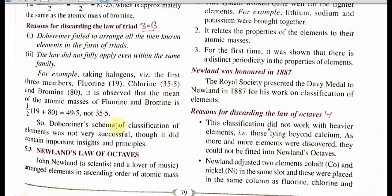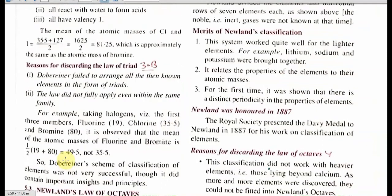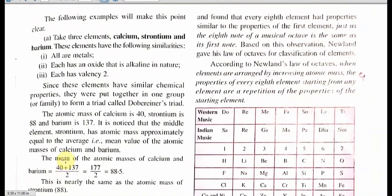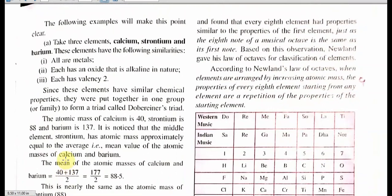People started to think of a new law. The next law is Newland's Law. John Newland was a lover of music, so he arranged the elements in a musical style and found that every eighth element has properties similar to the first.